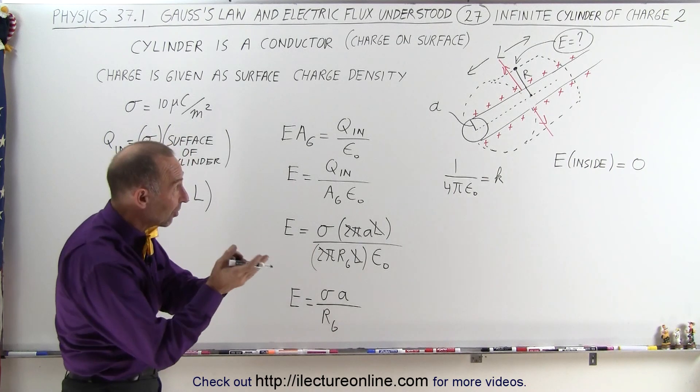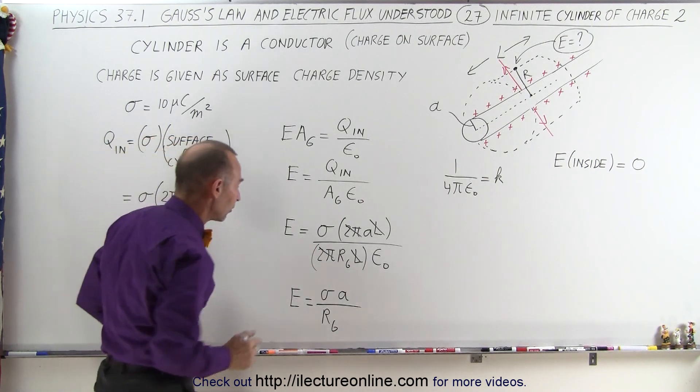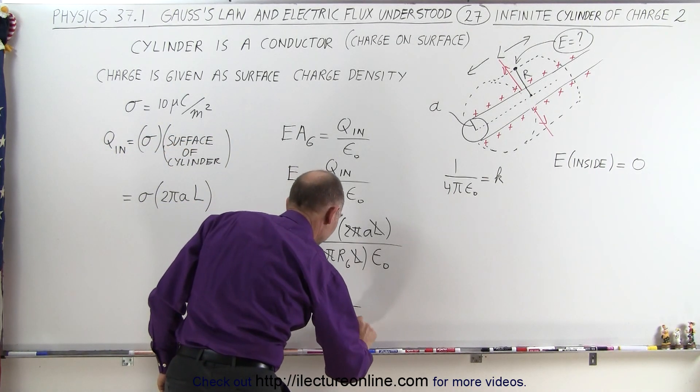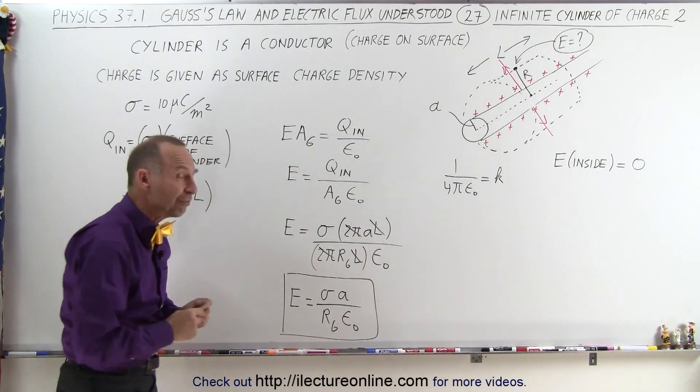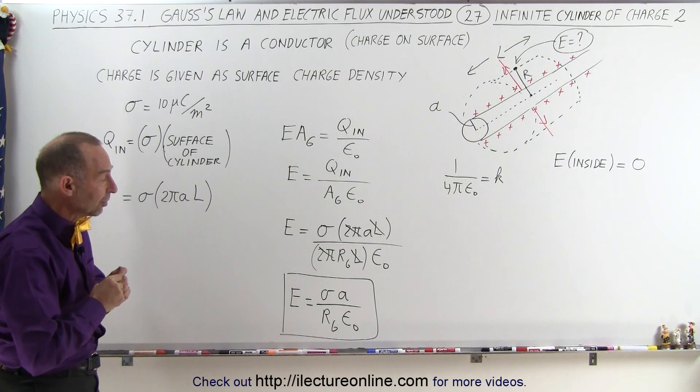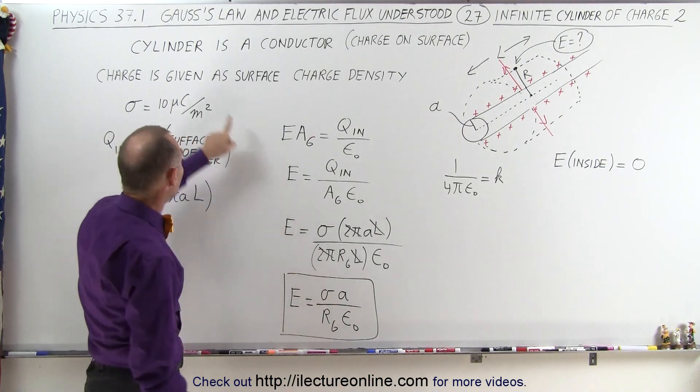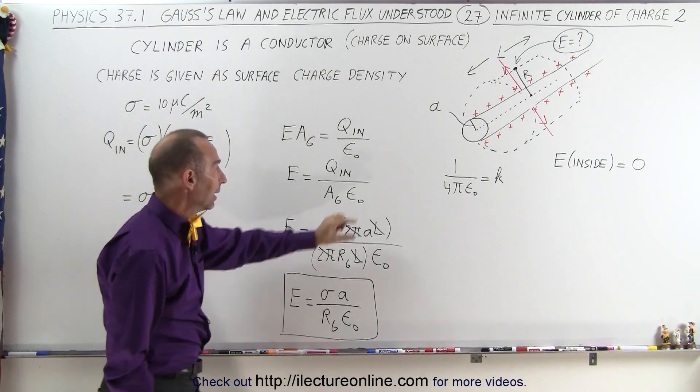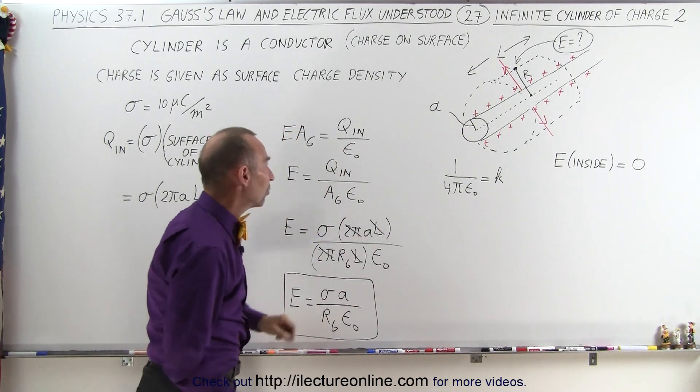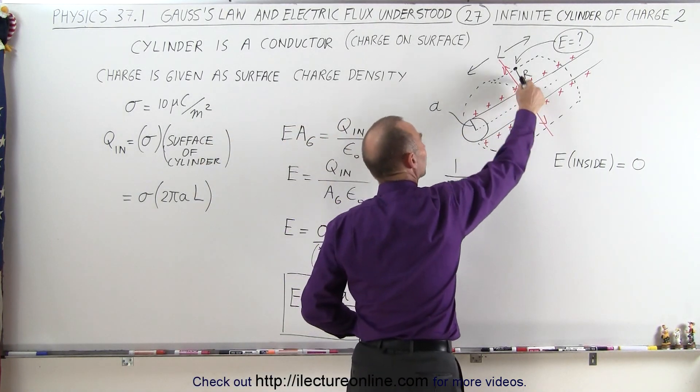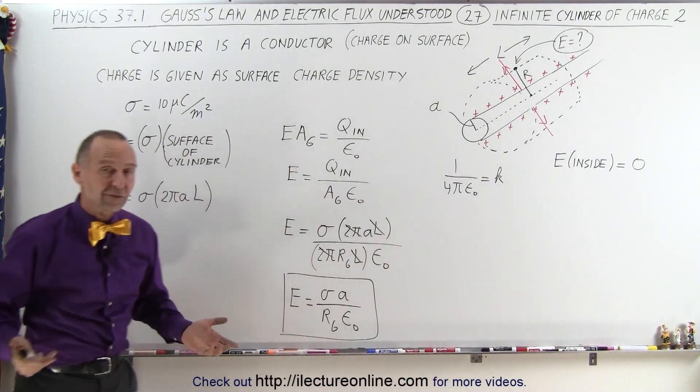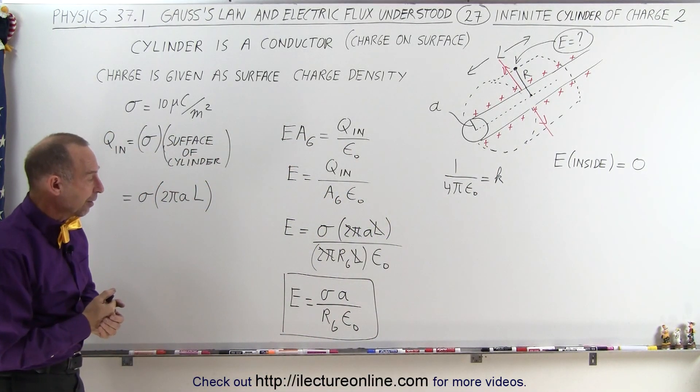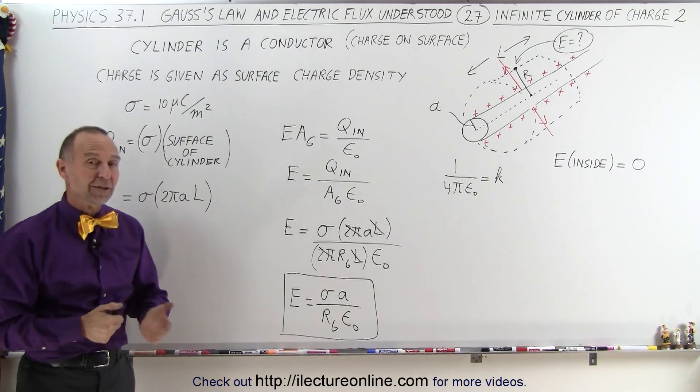Which indicates the distance away from the center cylinder where we want to know the electric field strength, times ε₀. And this will then be the equation we need to find the magnitude of the electric field. Again, σ is given to us, A is the radius of the cylinder, R_G is the distance from the center cylinder to the point where we want to know the electric field, and ε₀, simply the permittivity of free space. That's how it's done.